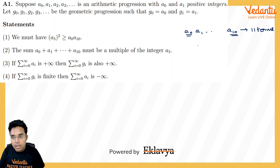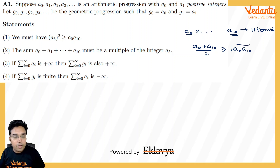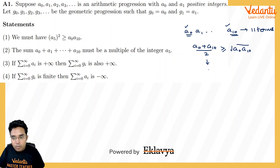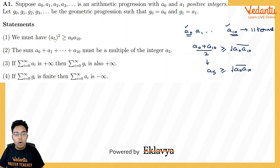If I apply AM-GM: (A0 + A10)/2 should be greater than or equal to √(A0·A10). There is a property of AP that the sum of the first term and last term, second term and second-last term, and so on, are all equal and equal to the middle term. With 11 terms from A0 to A10, the middle term is A5. So A5 ≥ √(A0·A10), and squaring gives A5² ≥ A0·A10. This statement is definitely true.